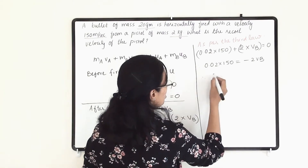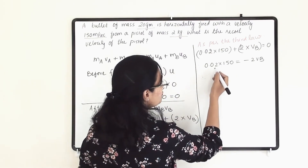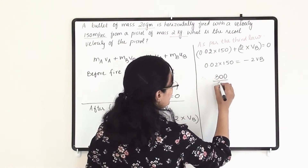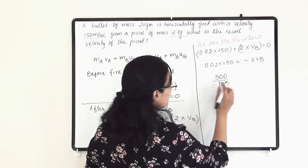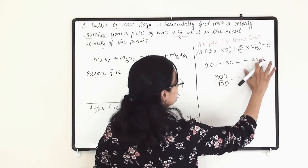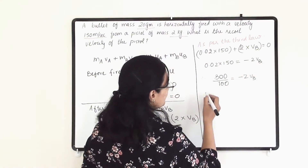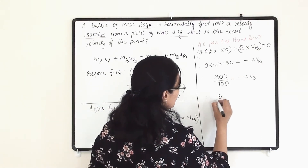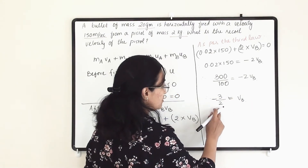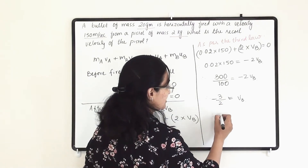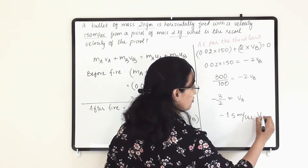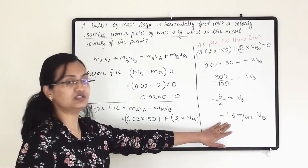Solving: 0.02 × 150 = 3, so 3 = −2·VB, which gives VB = −3/2 = −1.5 meters per second. That is the recoil velocity of the gun. The negative sign indicates the pistol moves in the opposite direction to the bullet.